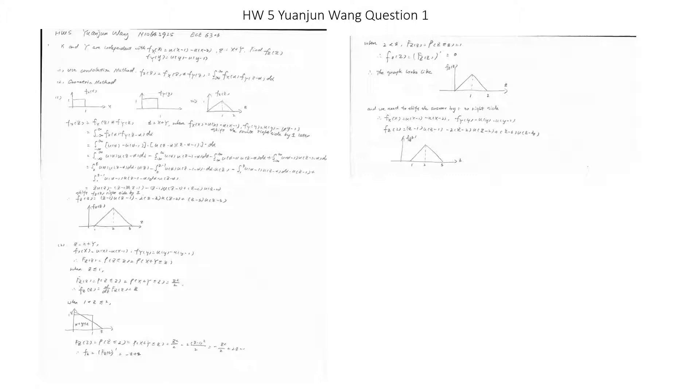Minus the integral of u(alpha-1) times u(z - alpha) d alpha, plus the integral of u(alpha-1) times u(z-1-alpha) d alpha. After all the calculation, fz(z) equals z·u(z) - (z-1)·u(z-1) - (z-1)·u(z-1) + (z-2)·u(z-2).